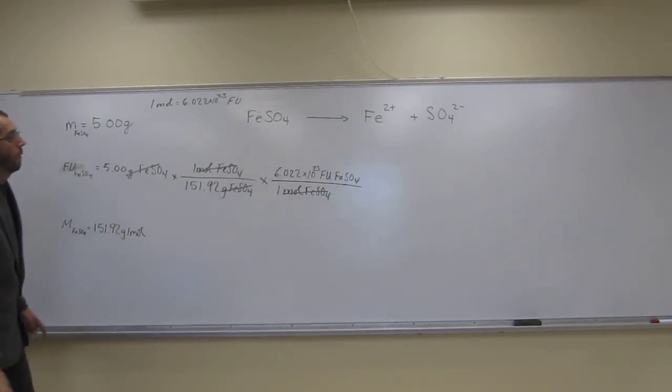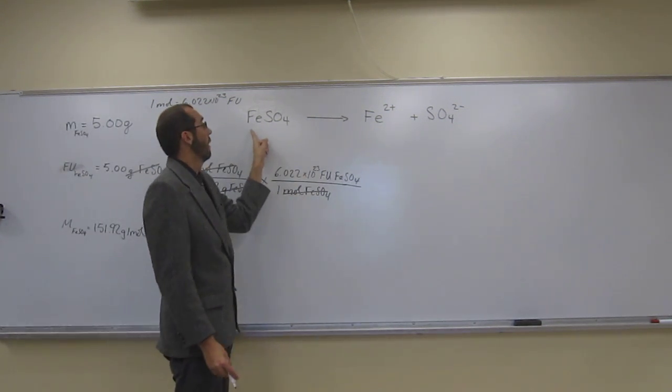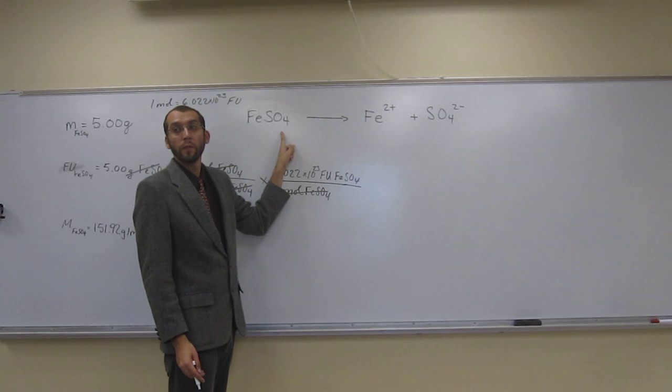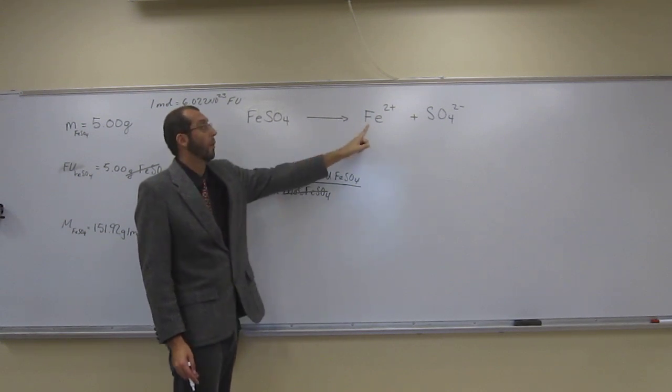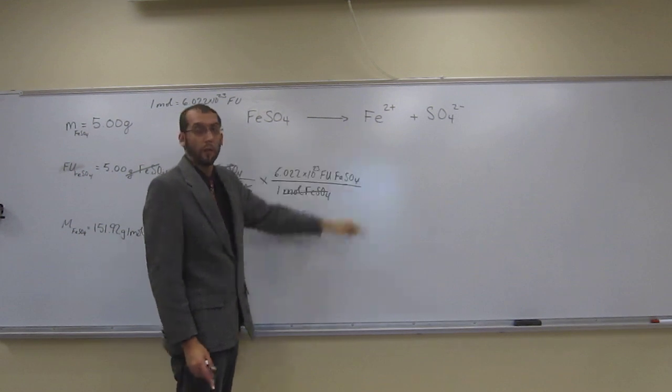So we don't want the number of formula units of iron 2 sulfate. We want the number of iron 2 ions. So for every one formula unit of iron 2 sulfate, you've got one iron 2 ion.